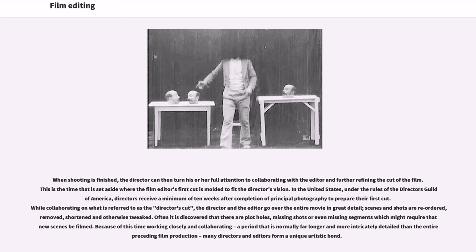This is the time set aside where the film editor's first cut is molded to fit the director's vision. In the United States, under the rules of the Director's Guild of America, directors receive a minimum of 10 weeks after completion of principal photography to prepare their first cut. While collaborating on what is referred to as the director's cut, the director and the editor go over the entire movie in great detail. Scenes and shots are reordered, removed, shortened, and otherwise tweaked. Often it is discovered that there are plot holes, missing shots, or even missing segments which might require that new scenes be filmed. Because of this time working closely and collaborating, a period that is normally far longer and more intricately detailed than the entire preceding film production, many directors and editors form a unique artistic bond.